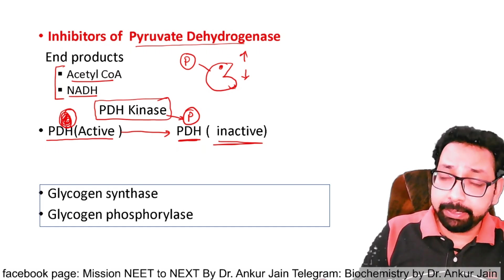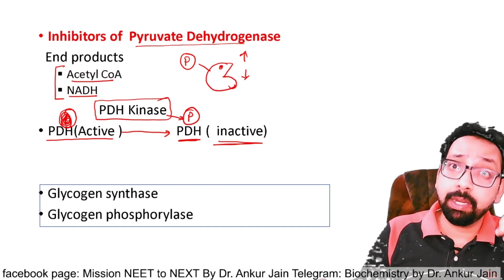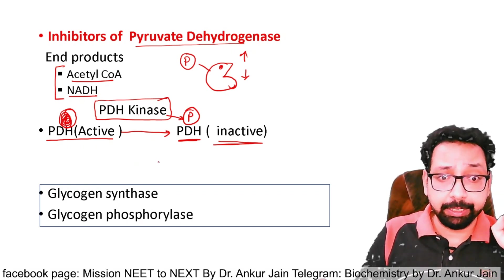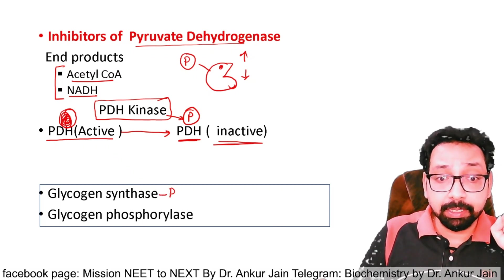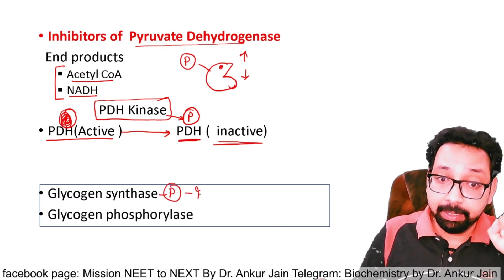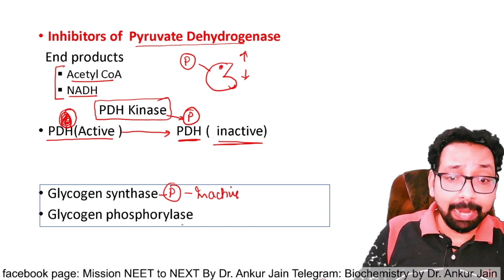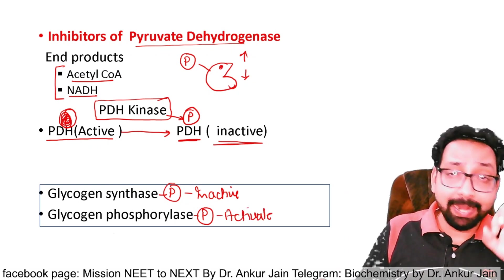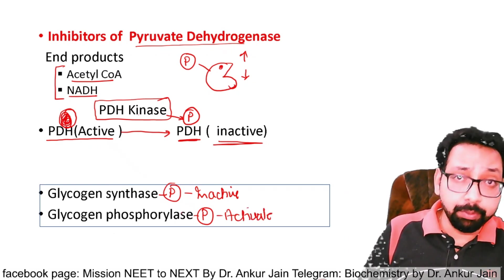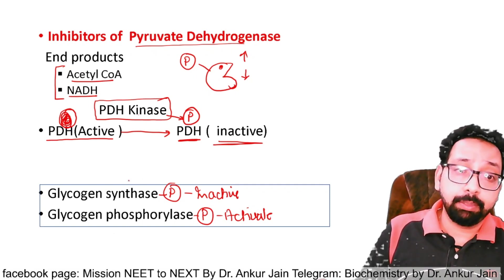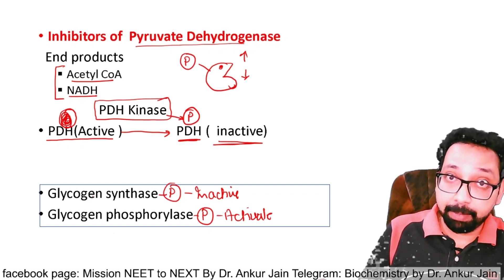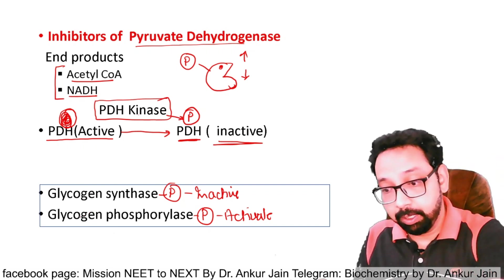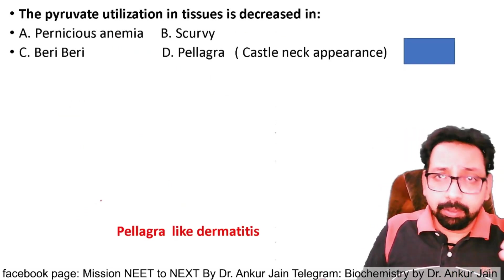In our body, some enzymes are activated by phosphorylation while others are inhibited — there is no single rule, you must memorize each case. Pyruvate dehydrogenase is inhibited by phosphorylation. Glycogen synthase is also inactivated by phosphorylation. However, glycogen phosphorylase is activated by phosphorylation. These are direct exam questions.